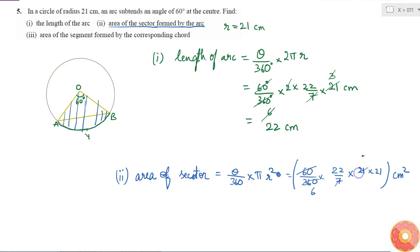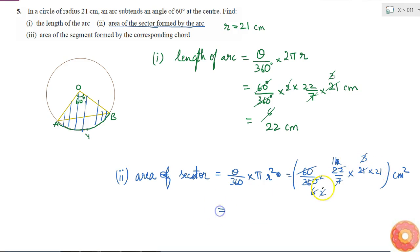Since 60 into 6 is 360, and 7 into 3 is 21, and 3 into 2 is 6, and 2 into 11 is 22, I'm left with 11 into 21, which is 231 cm squared. That is the area of the sector.